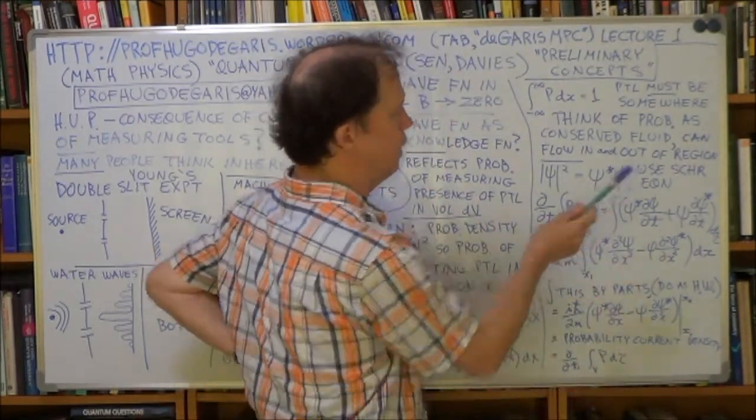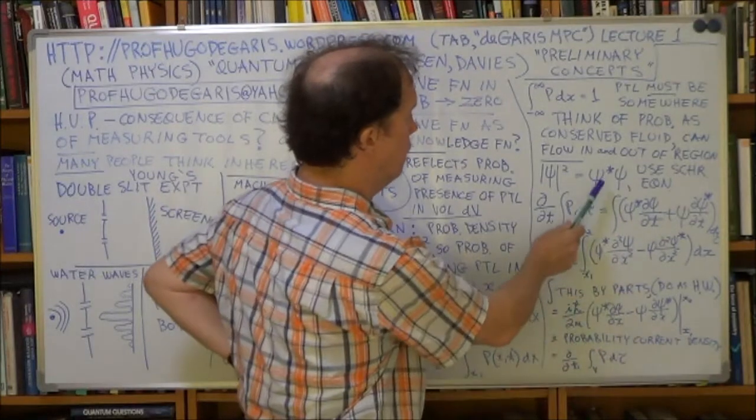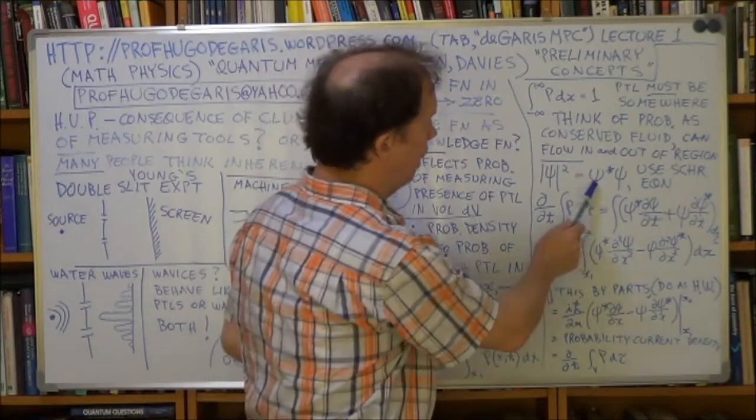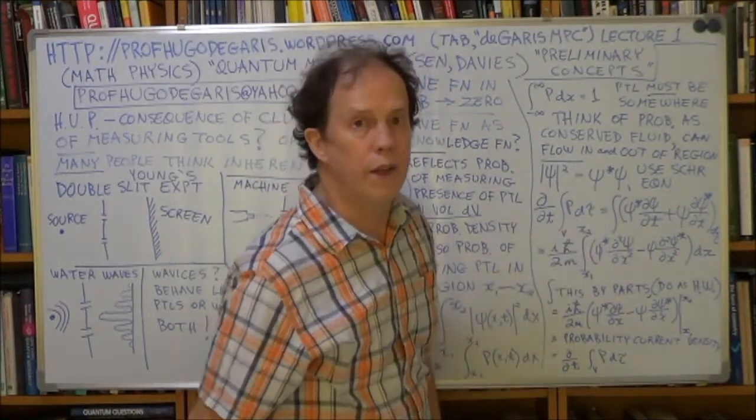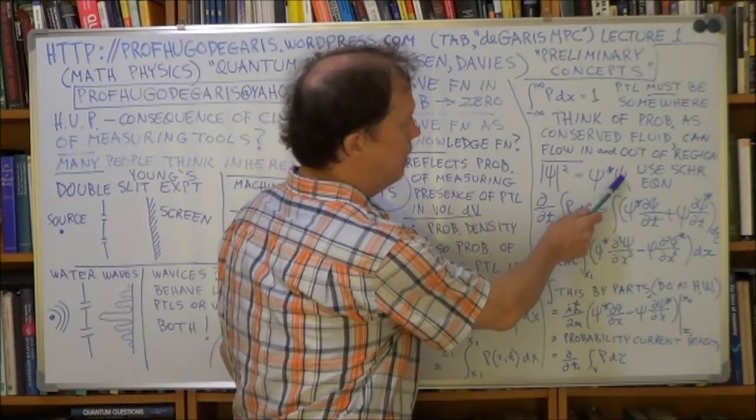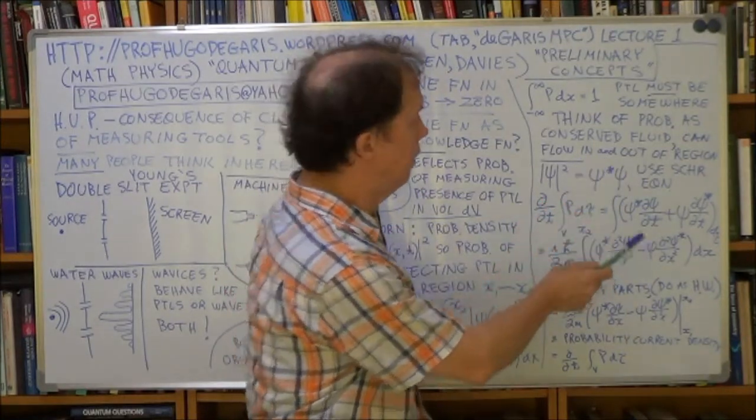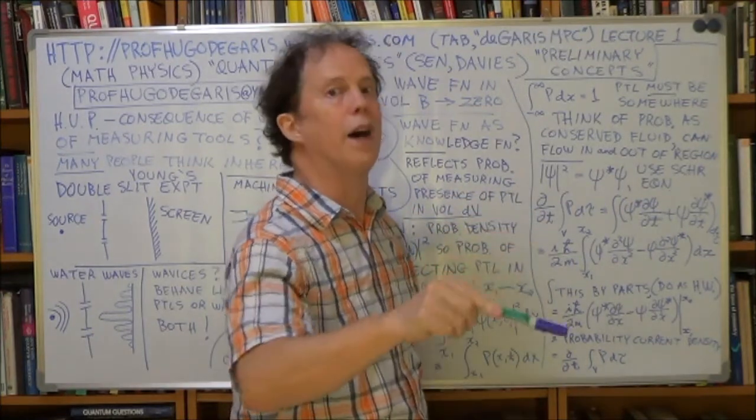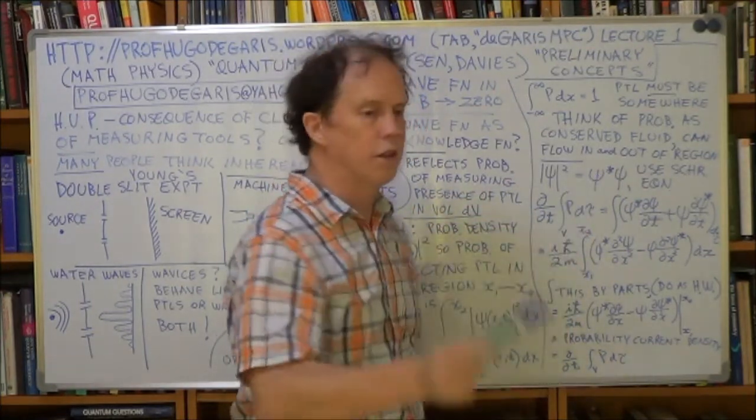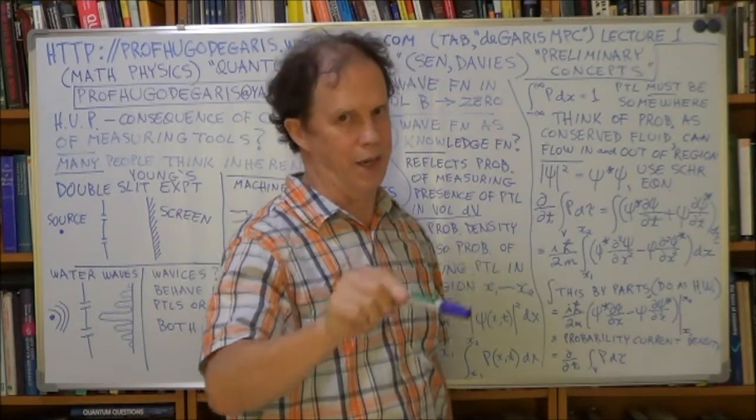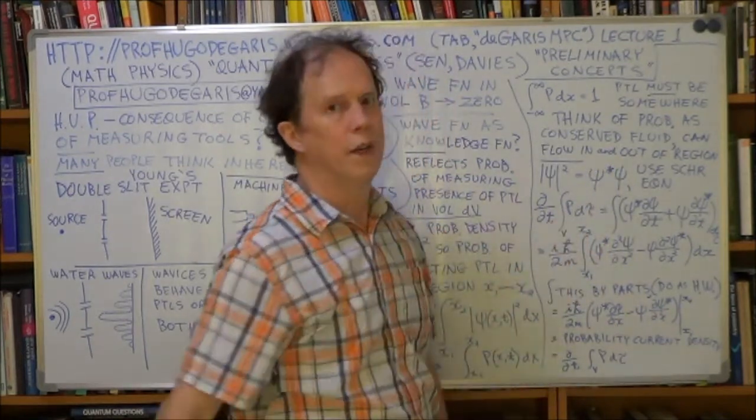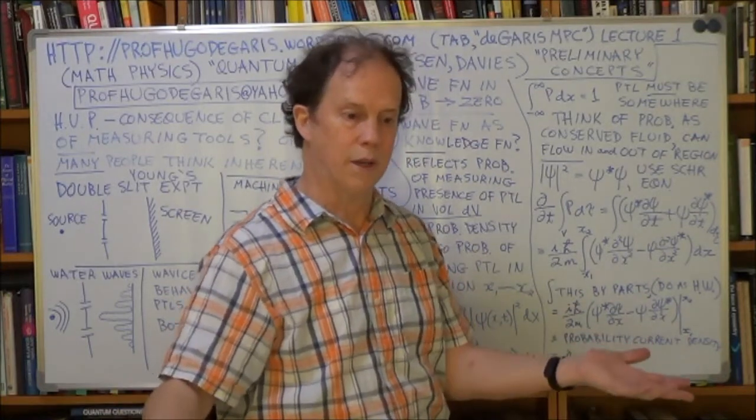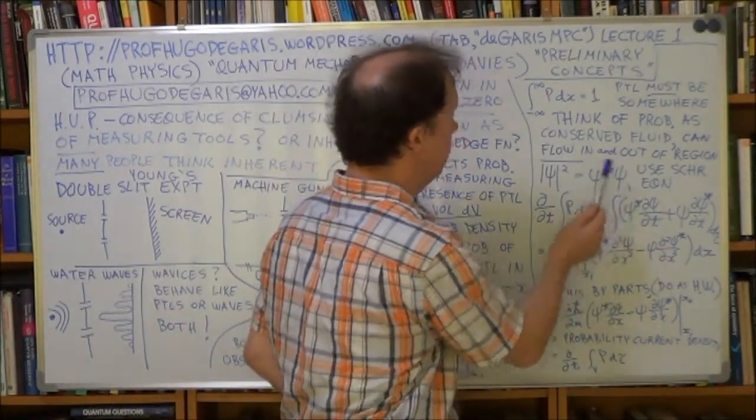So you take your psi function, a solution to Schrödinger's equation, and you conjugate it, and then you multiply the two, and that will give you a real number. This will be just a complex number of some sort, a plus ib, or if you like, x plus iy, and then you conjugate it, you'll get x minus iy. Now, if you multiply those two things together, trust me, you'll get x squared plus y squared, a real number. So this is now a real number.